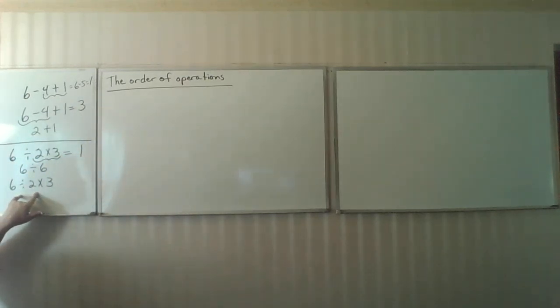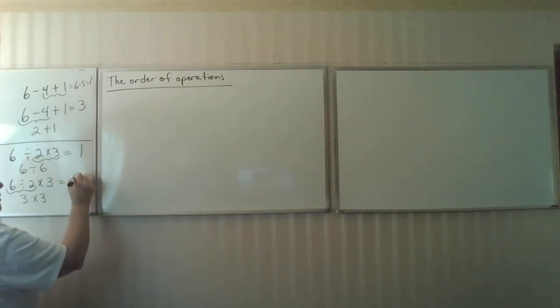And another student says, how about if we do it from left to right? So if I do that, 6 divided by 2 is 3, and times 3 now gives me the number 9.